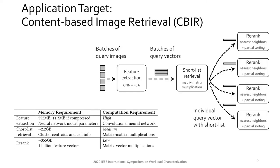We use content-based image retrieval as our target application because it consists of several kernels with different memory and compute requirements. The three main steps of CBIR are feature extraction, which uses a convolutional neural network; shortlist retrieval, which uses matrix-matrix multiplication; and a re-rank step that uses KNN with partial storage.